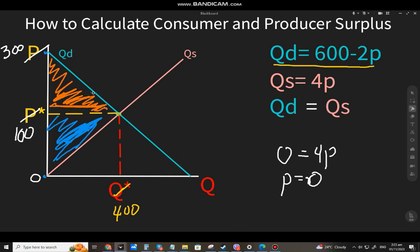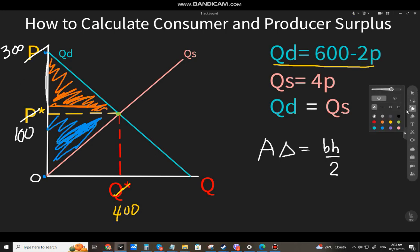Ngayon, para mahanap mo yung area ng triangle. Area ng triangle ay B times height over 2. Ito yung height. 300 at 100. So, alam natin na ito ay 200 yung height. Yung base naman, from dito hanggang dito. That will be 400. So, ang base natin ay 400.